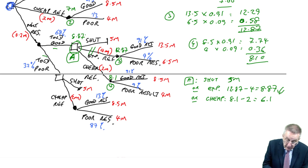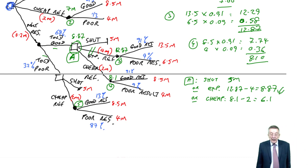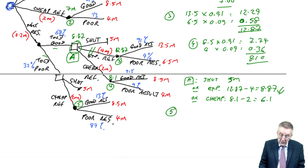Similarly, though, what about if they tell us it's poor? If they tell us it's poor, we then have to make a decision. We either shut and get five million. Or, the alternative is the cheap refurbishment and either get good result, poor result. So, 0.5. Good result, 8.5 million. Poor result, 4 million. Probabilities, 0.13, 0.87.